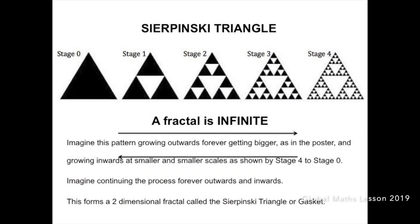Observe the black triangle. What happens to the black triangle as you progress from stage 0 to stage 1 to stage 2 to stage 3 and so on? They can grow outwards, forever getting bigger, as in the Global Maths lesson poster, or inwards, at smaller and smaller scales. Take a moment to imagine the process going forever outwards and forever inwards.